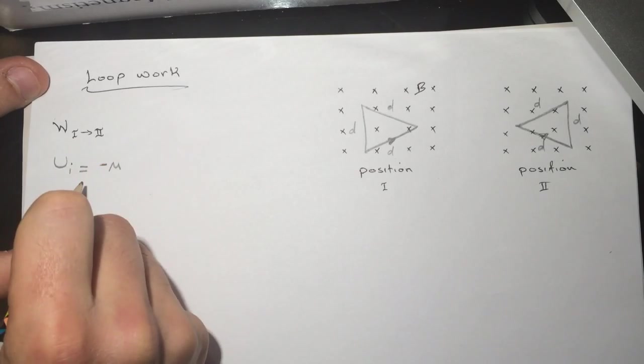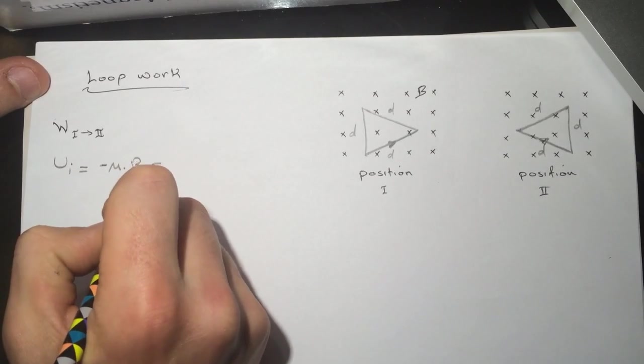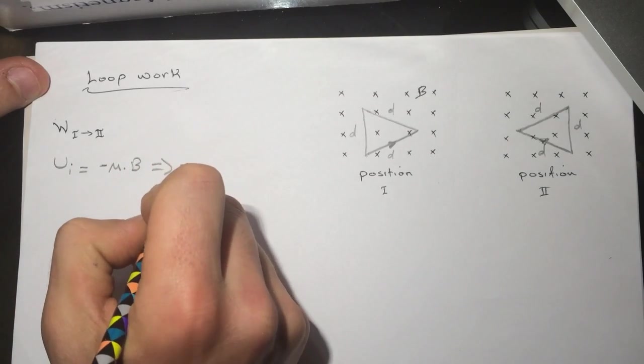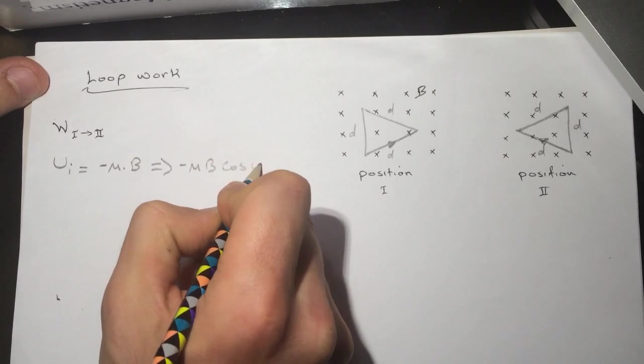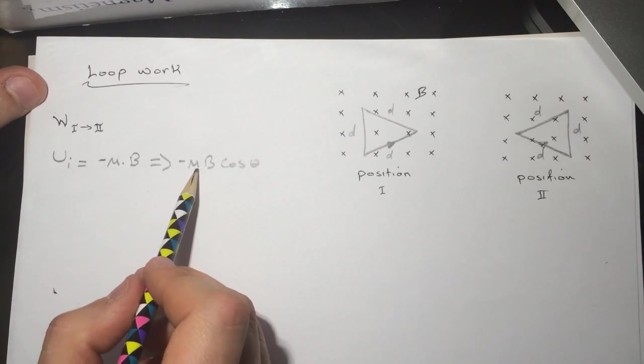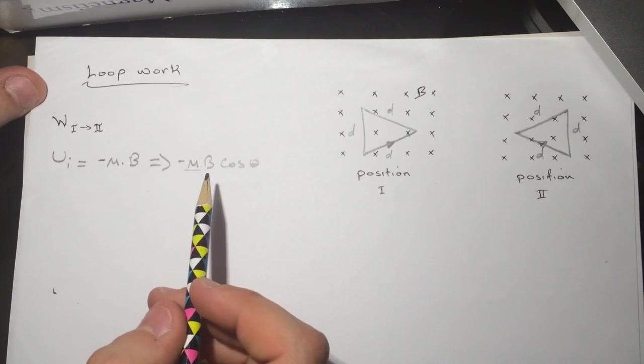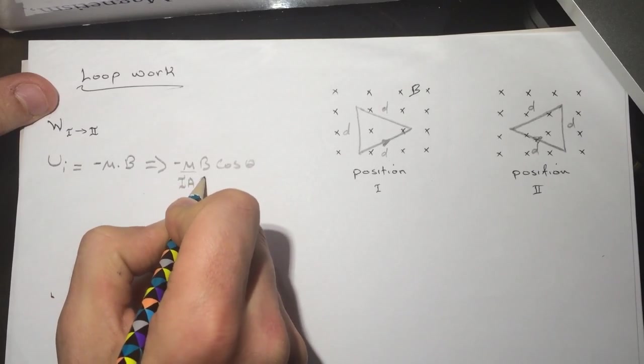Potential initial is minus μ dot B, which is minus μ times B times the cosine of theta. The μ is the dipole moment, which is IA.